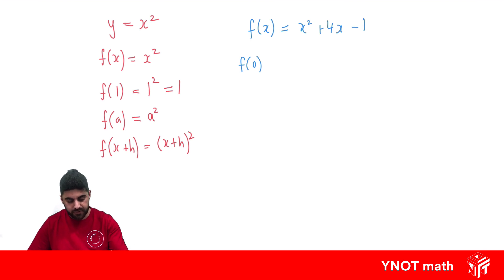Well, the f of 0, wherever I see x, I'm substituting 0. So 0 squared plus 4 times 0 minus 1, 0 squared is 0, 4 times 0 is 0 minus 1. So I get minus 1.